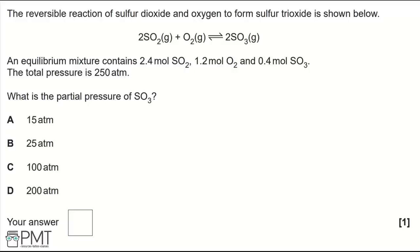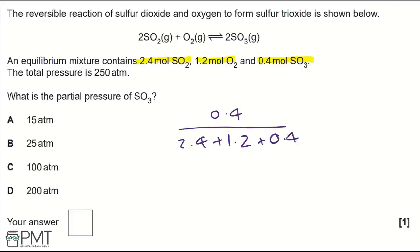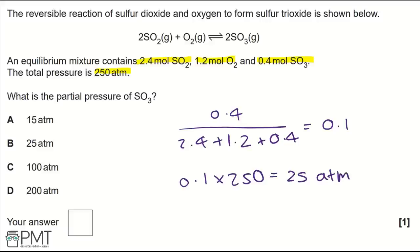To work out partial pressure, take the mole fraction multiplied by total pressure. Mole fraction of SO₃ = 0.4 ÷ (2.4 + 1.2 + 0.4) = 0.1. Then 0.1 × 250 = 25 atmospheres partial pressure of SO₃. This matches option B — write B in the answer box.